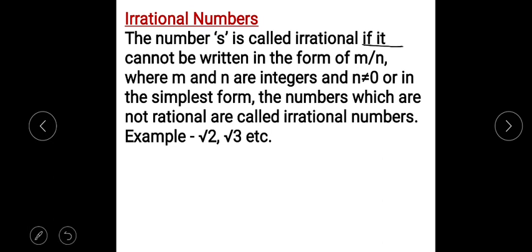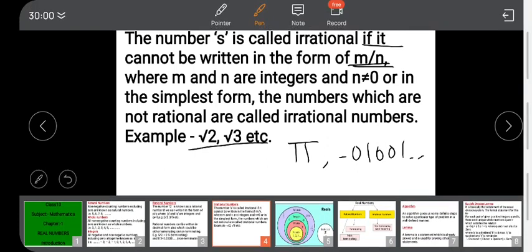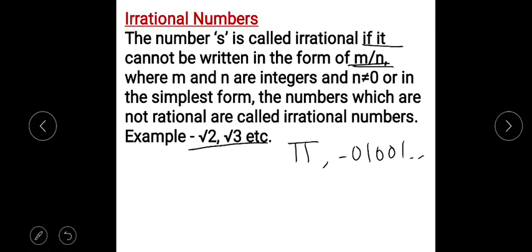A number s is called irrational if it cannot be written in the form p/q, meaning it cannot be represented as a numerator over a denominator. Examples of irrational numbers include √3, √5, π, and 0.01001... and so on.